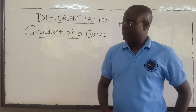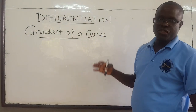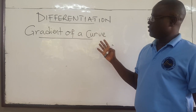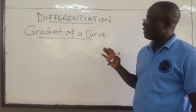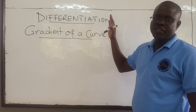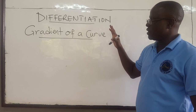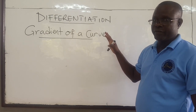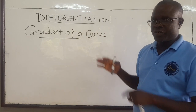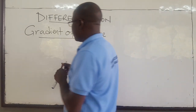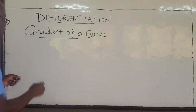Here I want to start with the introduction to differentiation. In order to get into differentiation, we want to start with looking at the gradient of a curve. I'll start with the gradient of the line — the slope of the line — which you already know.